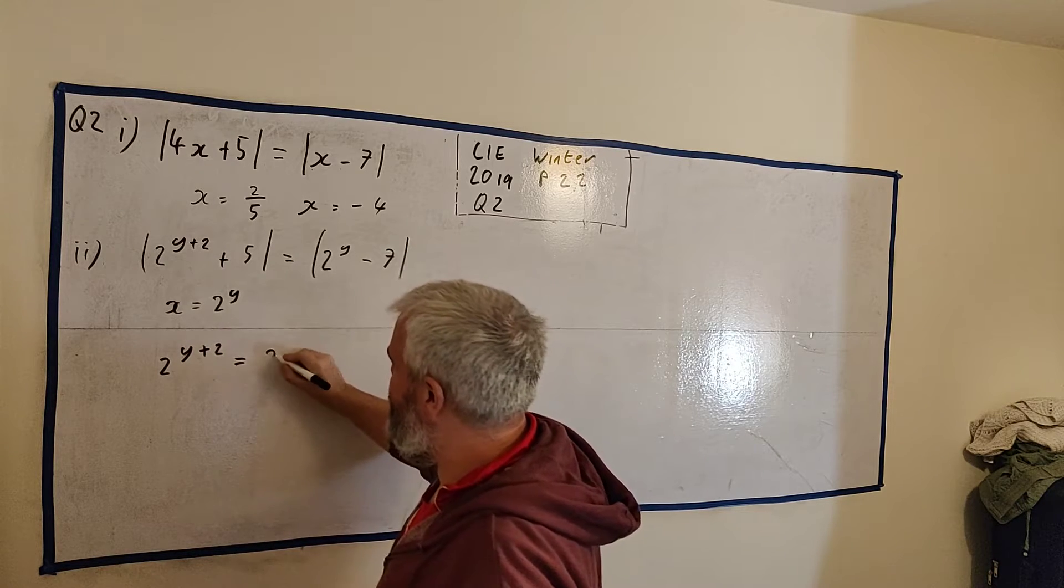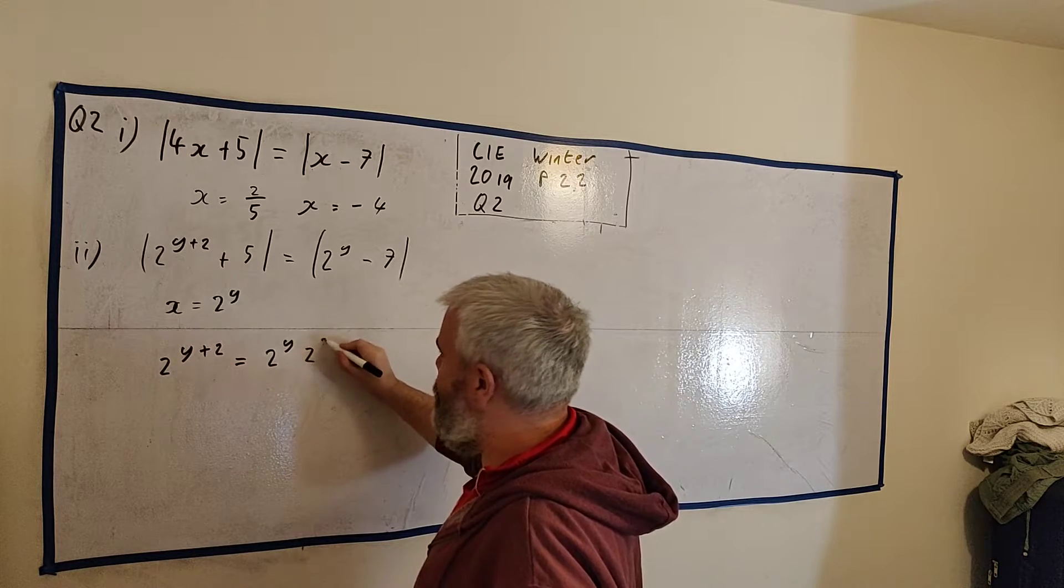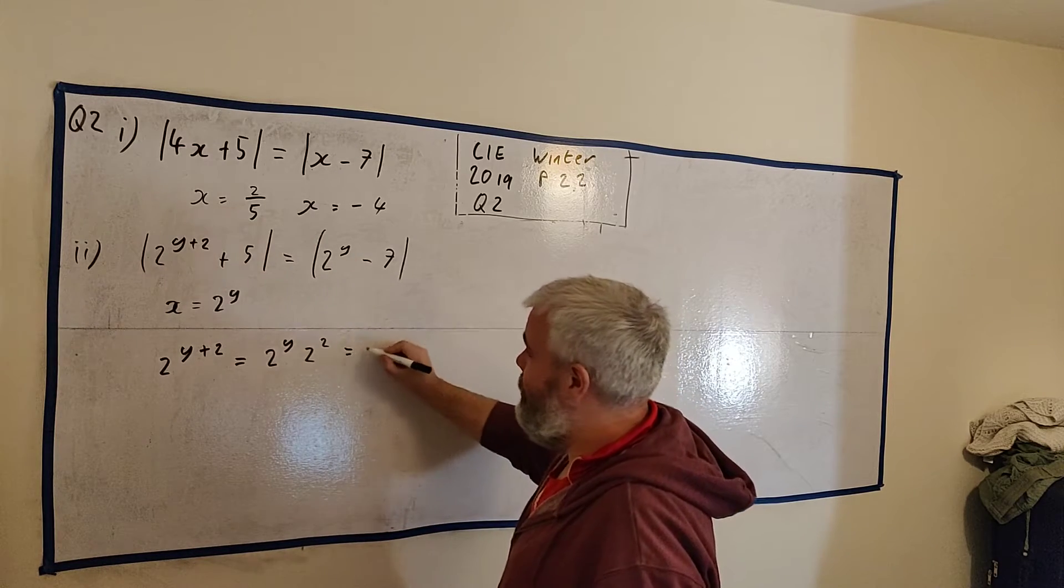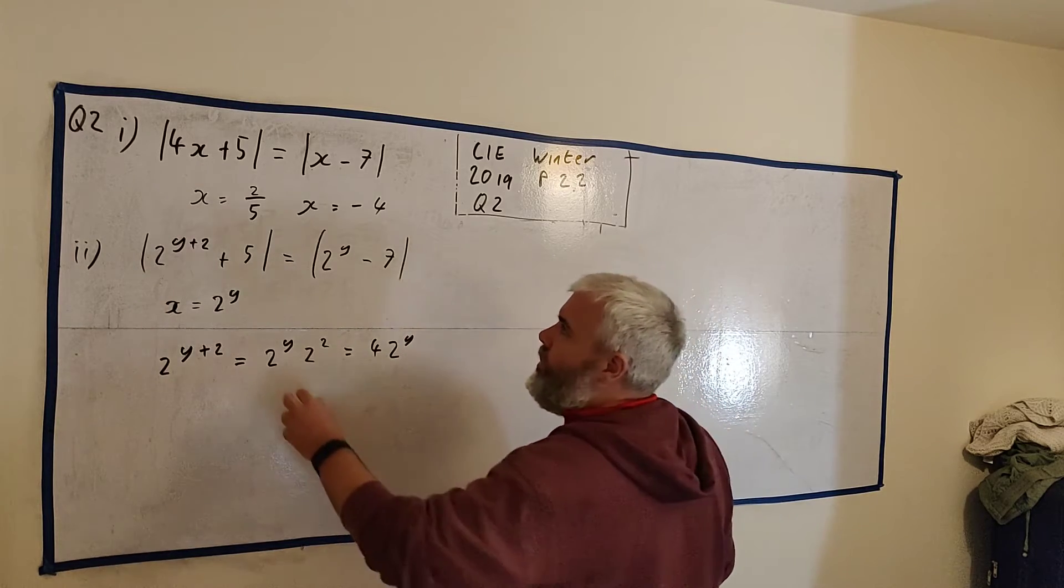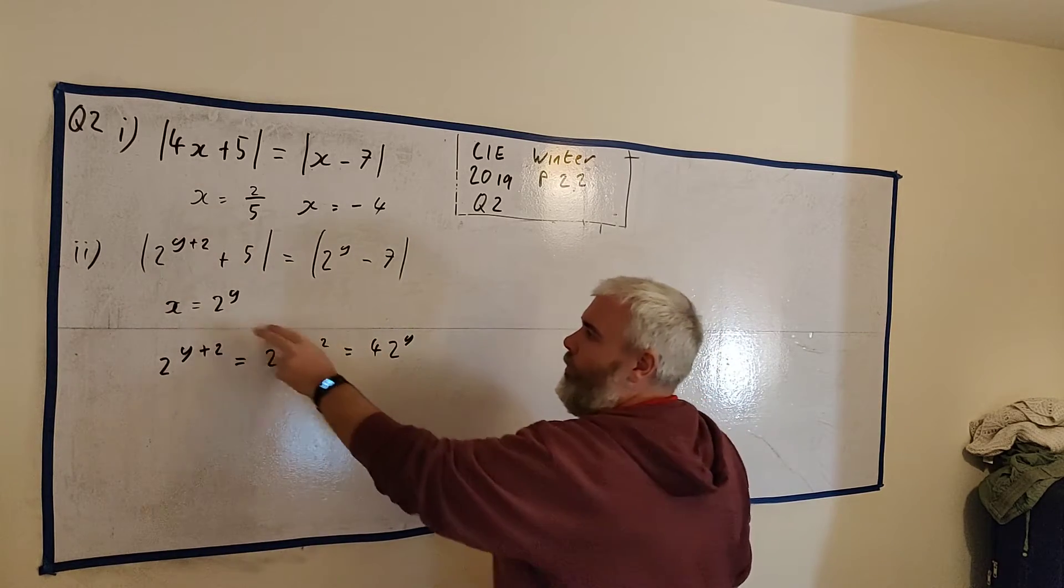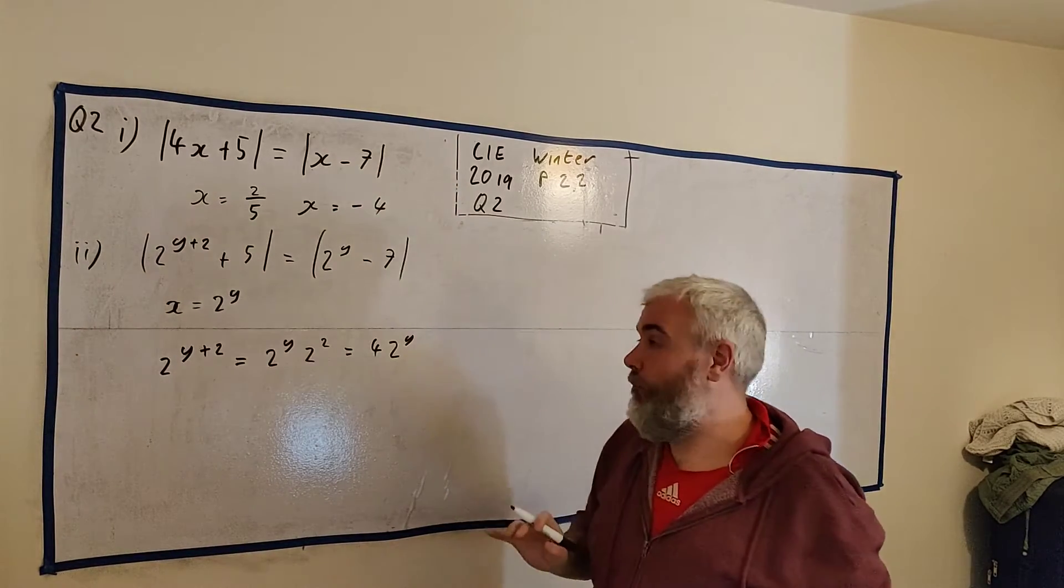2 to the power of y plus 2. Remember what the plus 2 means. That's 2 to the power of y multiplied by 2 to the power of 2. That's just equal to 4 times 2 to the power of y. Which is, if we replace 2 to the power of y with x, is identical to this as well. So this sum is actually identical to this sum.